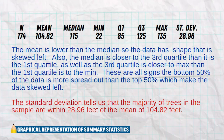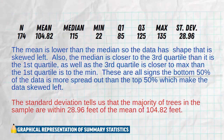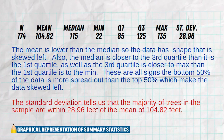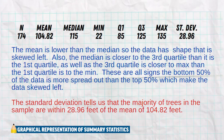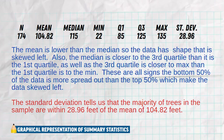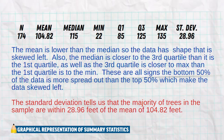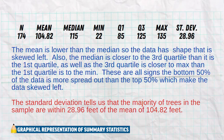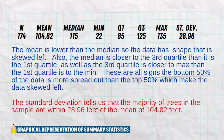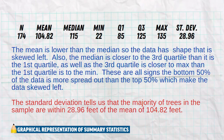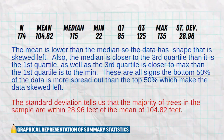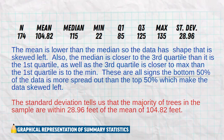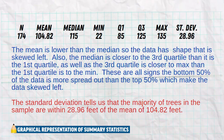Another very common question has you analyze the standard deviation. The standard deviation tells us the majority of trees in this sample are within 28.96 feet of the mean of 104.82 feet. Remember, the standard deviation tells you how far typical data is from the mean. Within means plus or minus — so if we take our mean and add or subtract 28.96, that tells us where the majority of our data falls. That standard deviation is kind of large, which is again another sign that the data is fairly spread out.